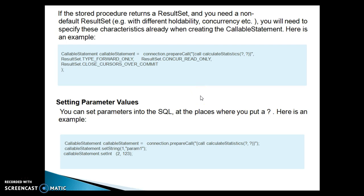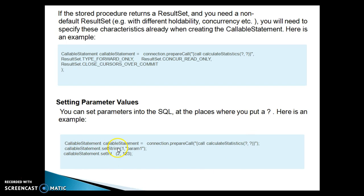Once you create a callable statement and try to call the stored procedure with input parameters, you set values for those input parameters at the placeholder positions. For example, calling a stored procedure like calculateStatistics with two parameters: you use callableStatement.setString for the first parameter of type String, passing index 1 and the value, and setInt for the second parameter of type integer, passing the index and value. This is similar to how you set parameters in a prepared statement.